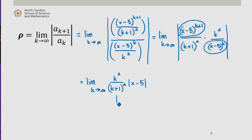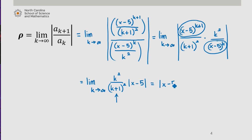Now what we know about the limit as k approaches infinity of k squared over (k plus 1) squared is that it's actually equal to 1. We can verify this using multiple methods, one of which is L'Hôpital's rule, but ultimately we know that this limit is equal to the absolute value of x minus 5.